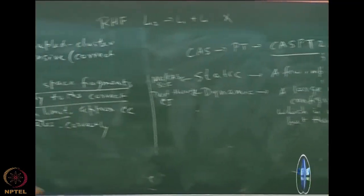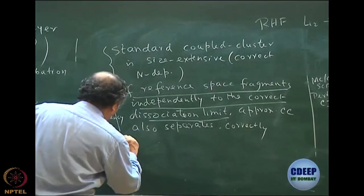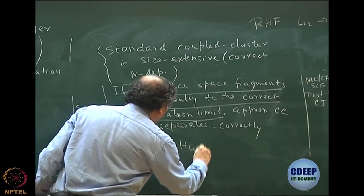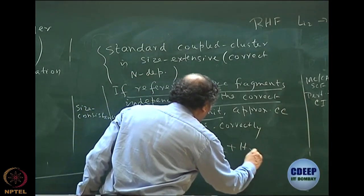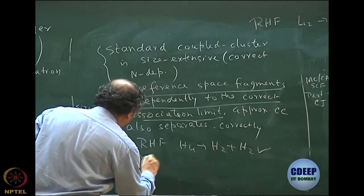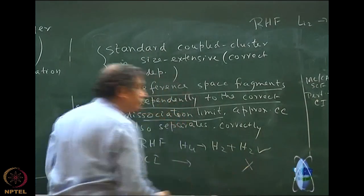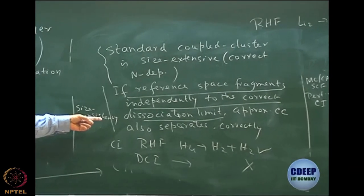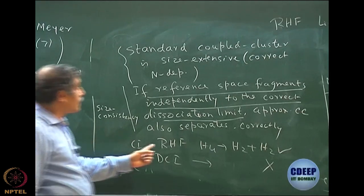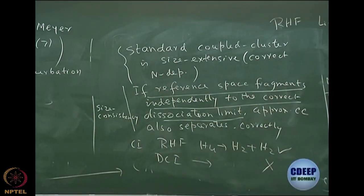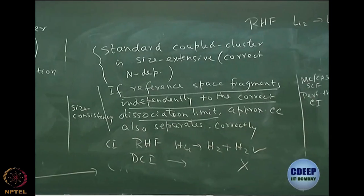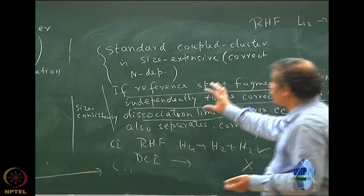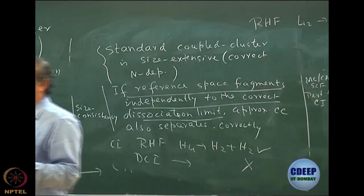On the other hand you look at CI. For the CI what happened, the RHF was correct. H4 going to H2 plus H2 was all right. Then I did a DCI then the separation could not be done. This will never happen in coupled cluster because the reference space, if the reference space correctly separates, coupled cluster will guarantee the dissociation, it will not spoil.